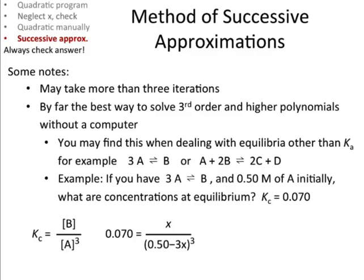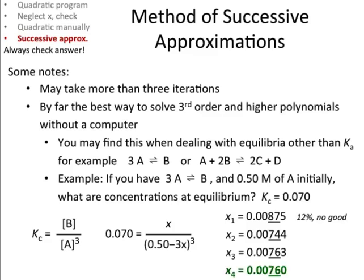When you do methods of successive approximations, the x in the denominator, the one that's in the cube, start that as zero, basically. Neglect it. And then you solve for x1. You can't get away with just neglecting it because you get a 12% error if you do that. No good. And then if you keep going, here's x2. And you find x2 by taking x1 and plugging it back into the denominator and solving again. And then you repeat x3, x4. Between x3 and x4, it didn't change. So that means use x4 and you're done. And you're not going to solve this really any other way without a computer or a fancy calculator. So it's good to know for that.